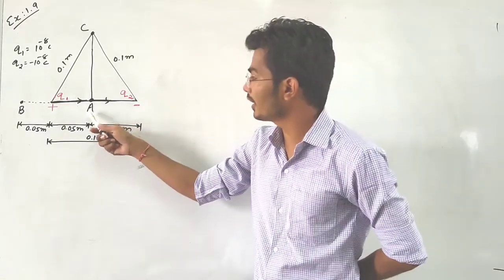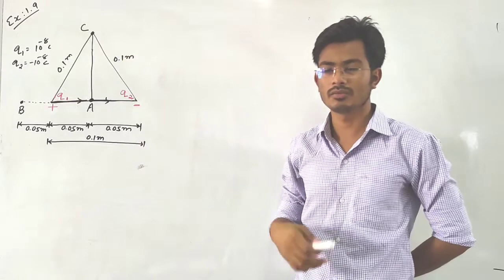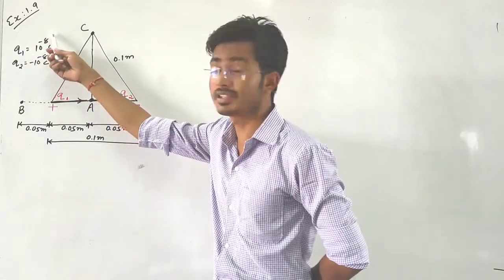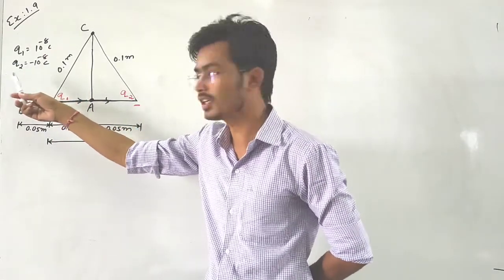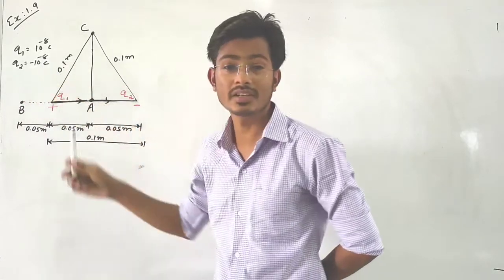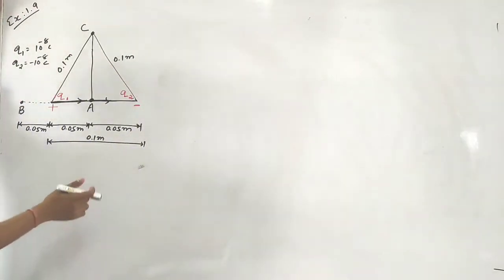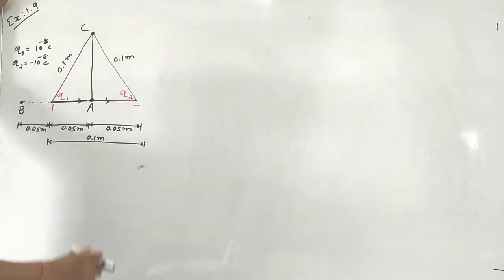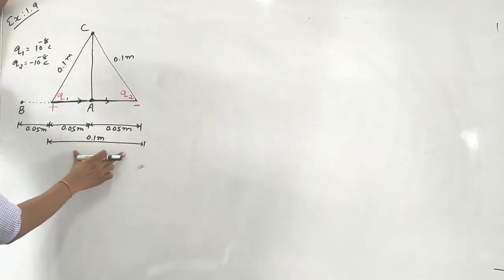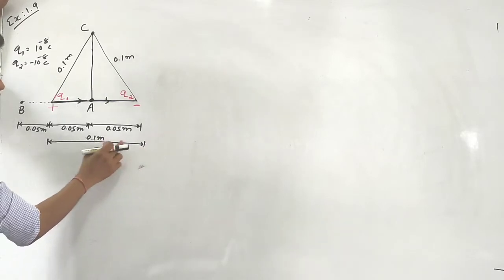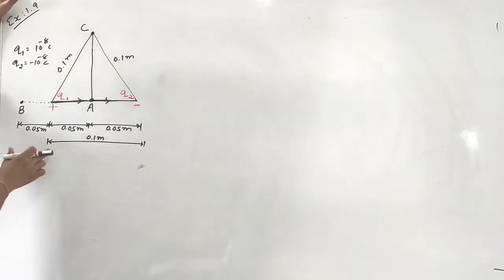From the figure, we have point A, point B, and point C. The charges given are q1, which is 10 raise to minus 8 Coulomb (positive charge), and q2, which is minus 10 raise to minus 8 Coulomb (negative charge). The separation between charges is 0.1 meter on each side, and from the positive charge to point B, the distance is 0.05 meter.